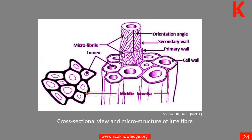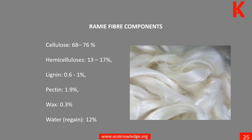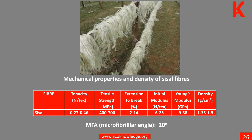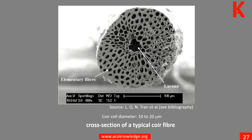Jute fibers are multicellular fibers with very small individual cells bonded together into long strands in the plant stem. Learn more in Unit 10. The composition of ramie fiber is 68 to 76 percent cellulose. Learn more in Unit 11.